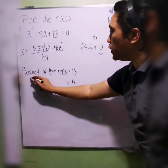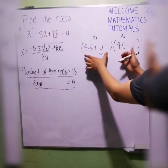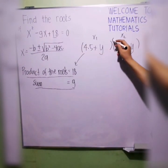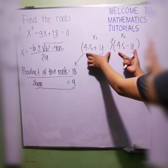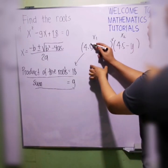After the sum, we will now look at the product of the roots. These are the two roots that should have a product of 18. We will multiply this one and this should equal to 18.